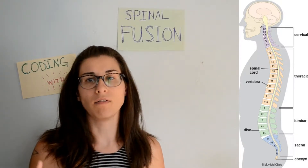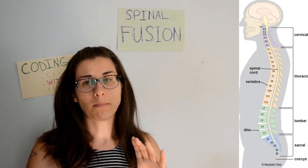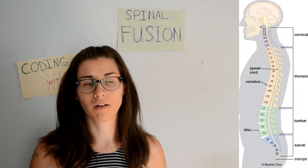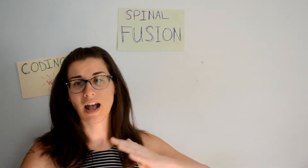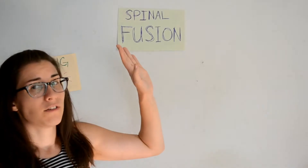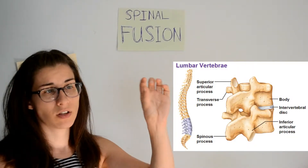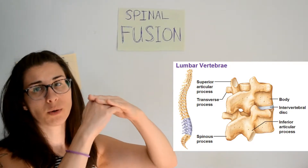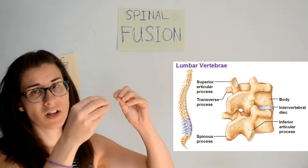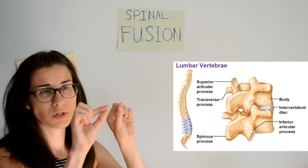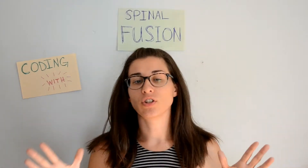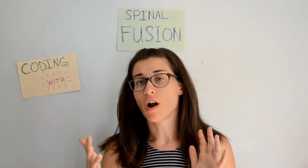The thoracic vertebrae and up are considered upper joints, so you will find cervical and thoracic in the upper joints body system of the PCS code book. The lumbar, sacral, and coccyx are in the lower joints body system. Within fusion specifically, we are only talking about the intervertebral joints — the space in between the vertebrae — which is why it is in the joint body system sections of the code book.